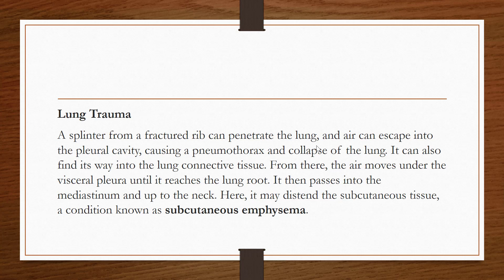Because air is present in the lung when it is punctured or penetrated by the fractured rib, the air will come out into the pleural cavity. This condition is called pneumothorax, and there will be collapse of the lung.